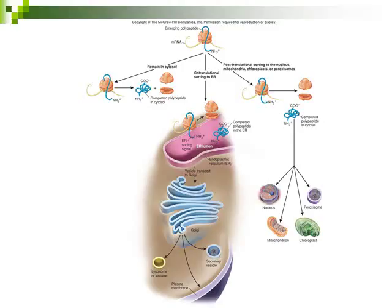As proteins are being created, they can be sorted in three different ways. The first way is that the emerging polypeptide — a growing amino acid chain — could just remain in the cytosol, the liquid in the cell. It could fold up into its 3D shape, and then it's complete and just remains in that liquid. That's the first sorting pathway.